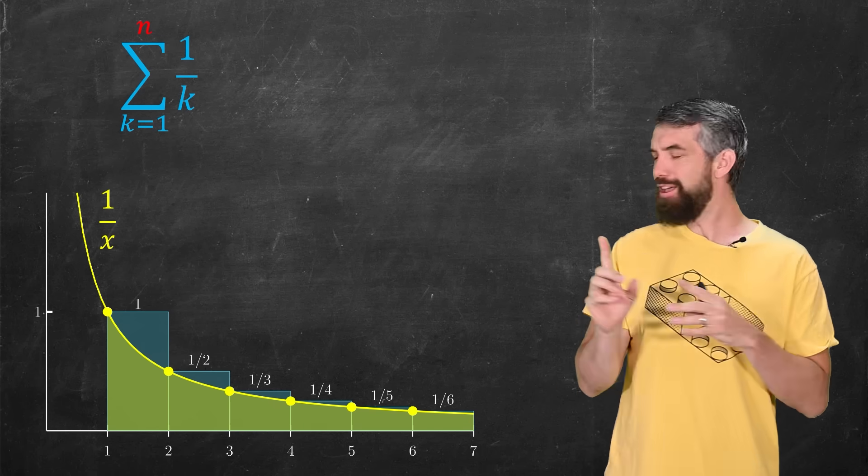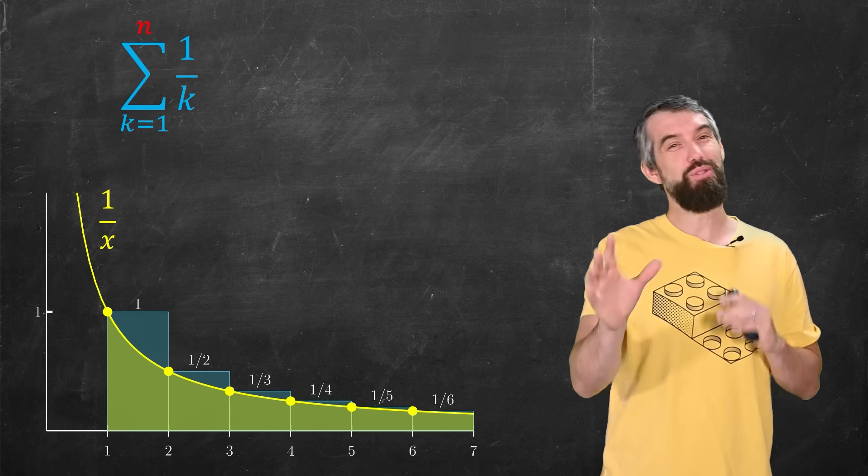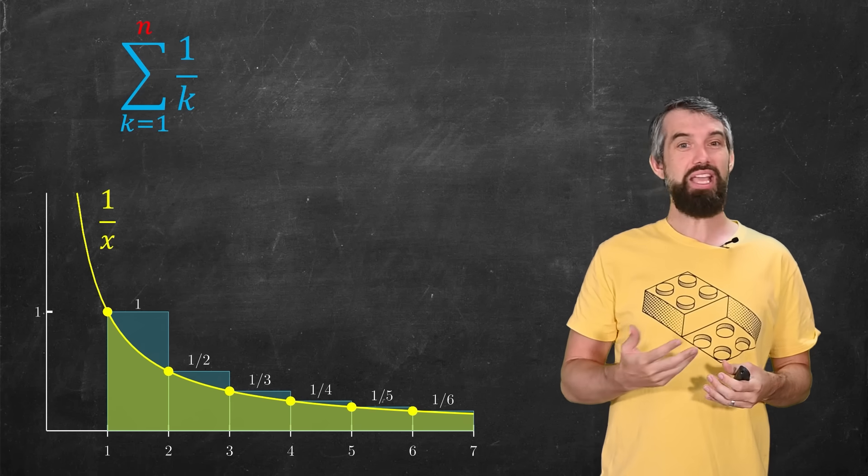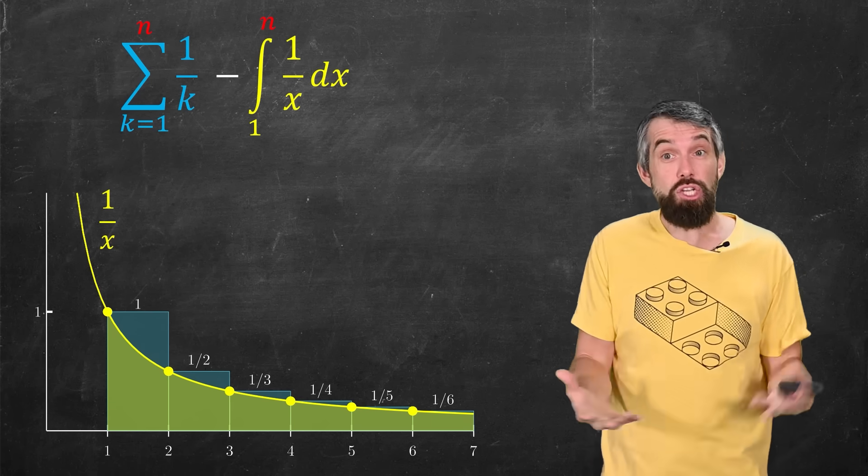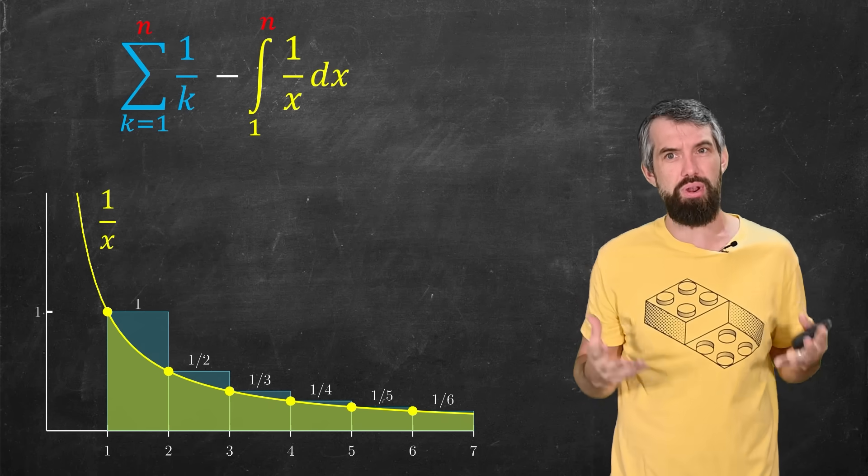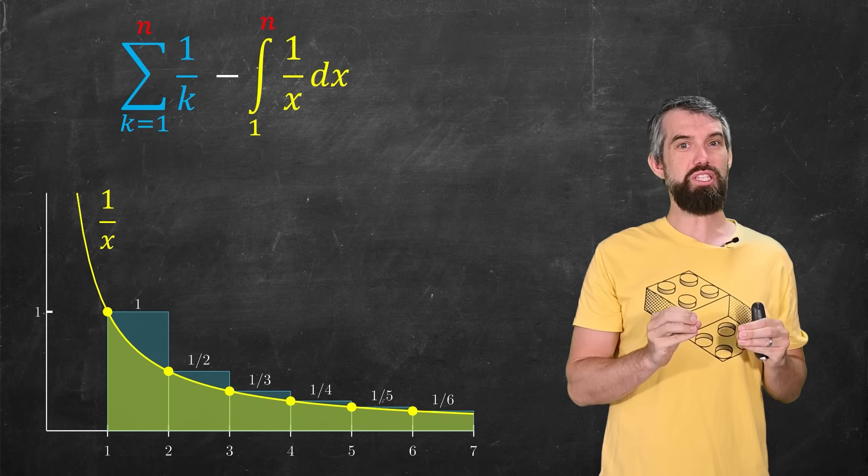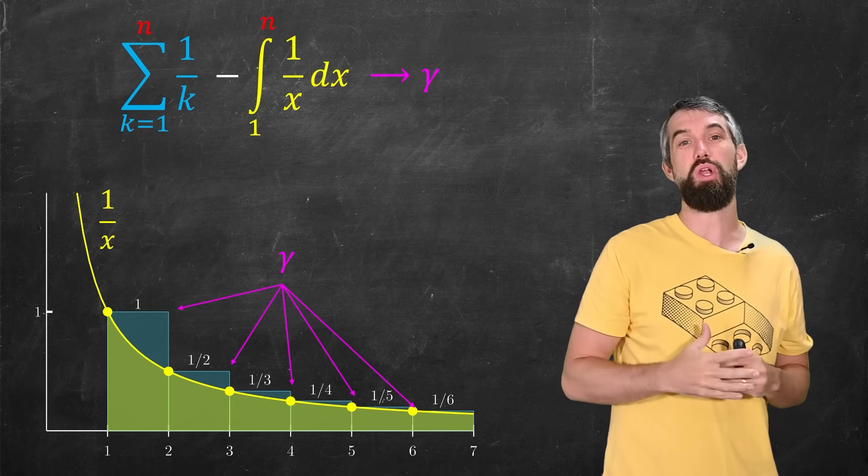But then, if I put on the curve 1 over x and look at the area under the curve, well, those of you who have seen a bit of calculus might recognize this as the integral test. That is, I can look at the difference between the harmonic series and the integral, which is just a fancy name for the area under the curve. But if I consider the difference between these two things, well, the difference is represented by these little bits of the rectangles that stick out above the curve.